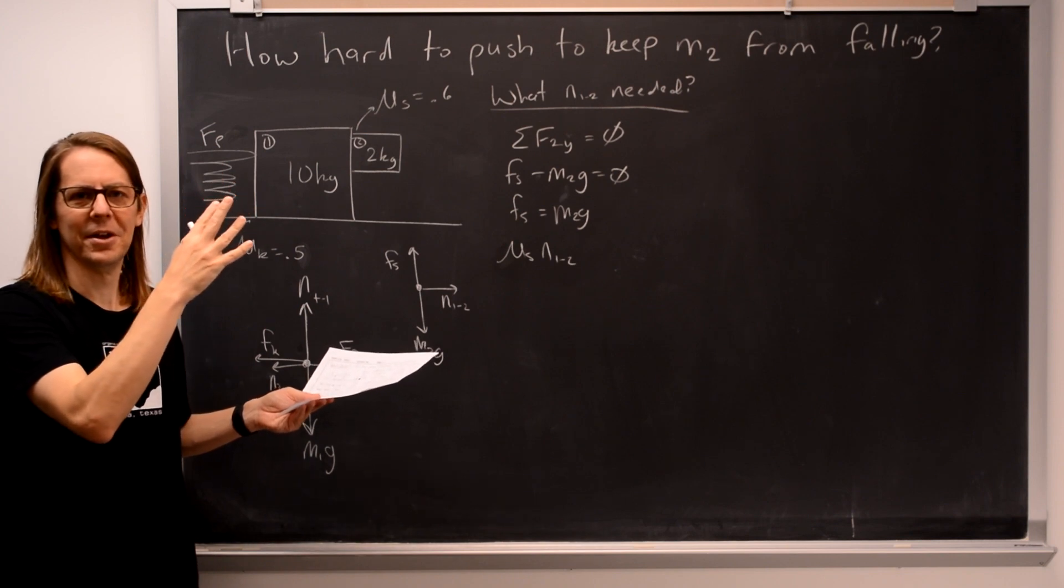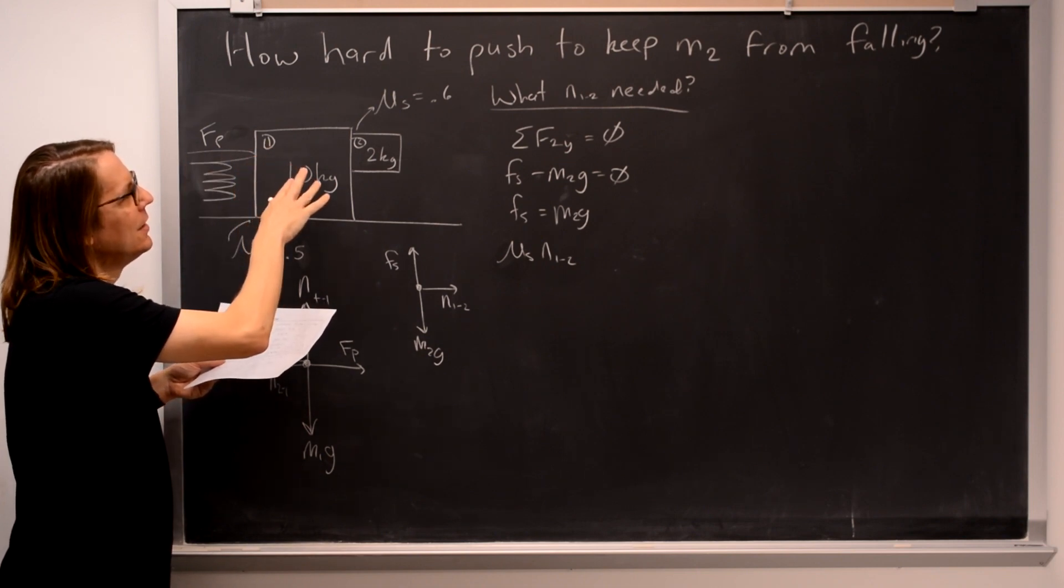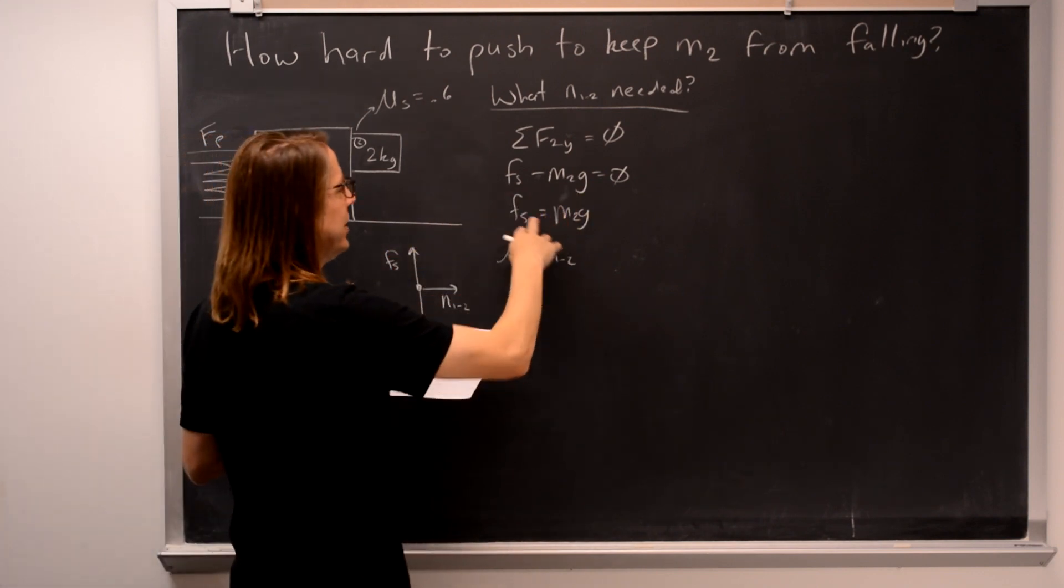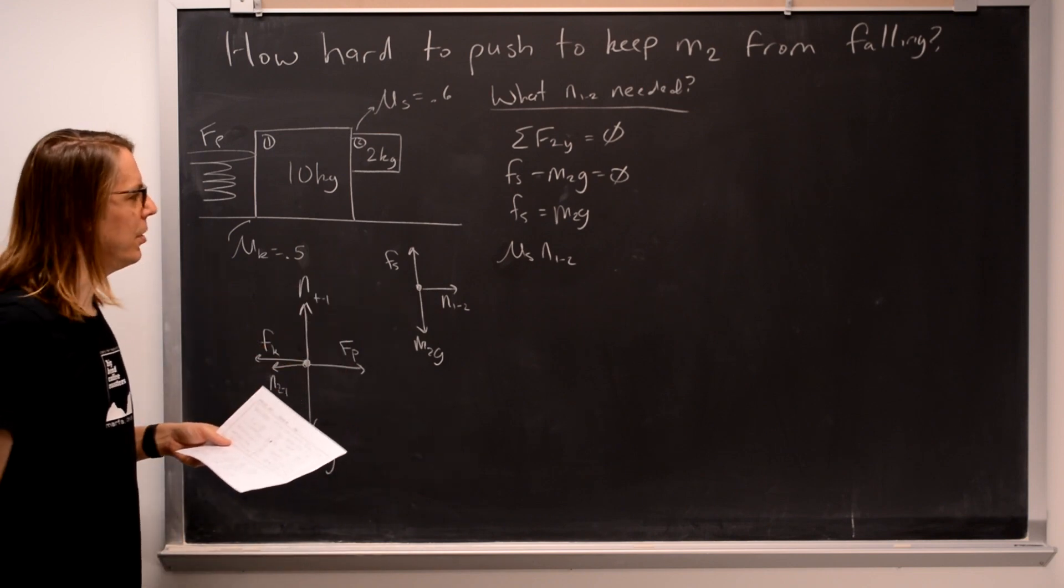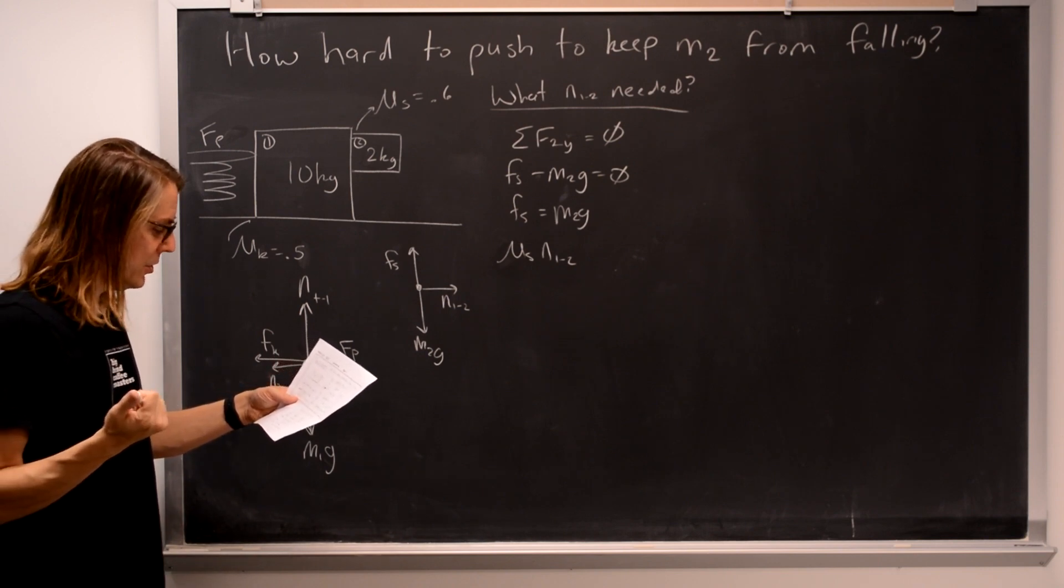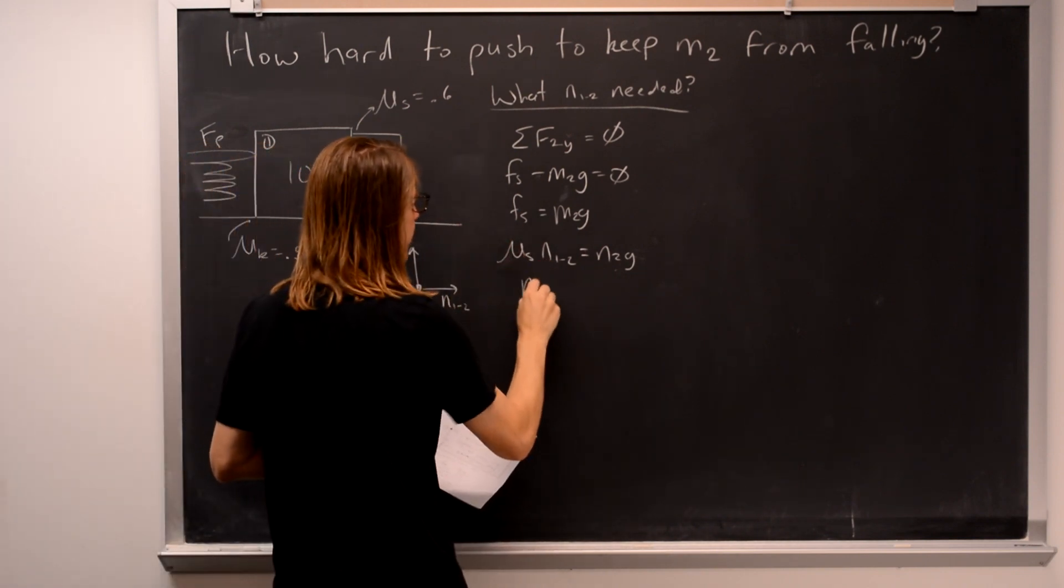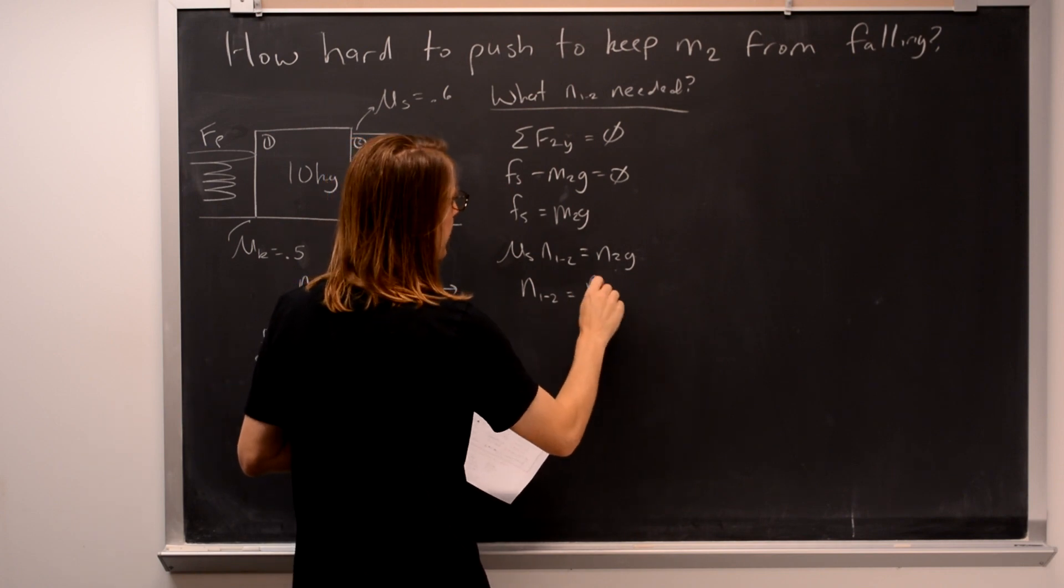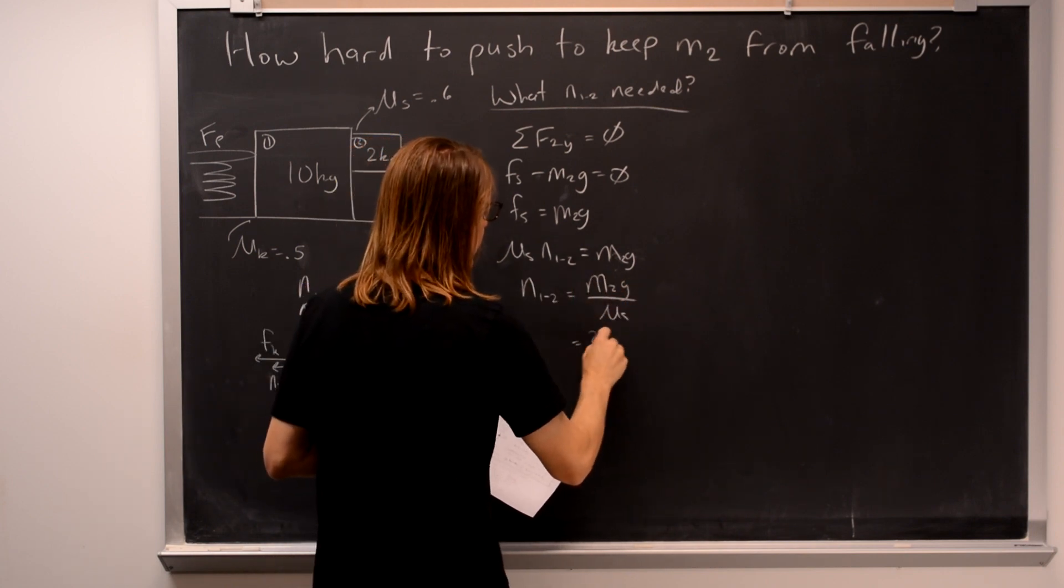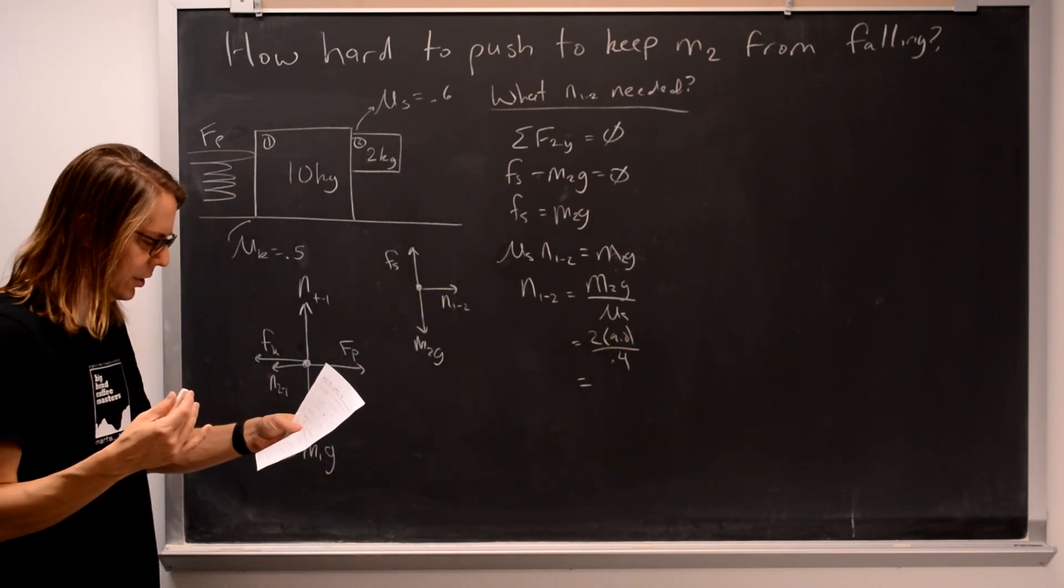Now, remember, it could be any value up to that. We're looking for what is needed. What's the minimum force you can apply to keep it from falling? If you push harder, it'll definitely work. So if we push a little bit softer, we're seeing how far can you bring it down before this has to exceed the value to fall. So we're just going to say it's equal to mu S N1,2. We care about the maximum value in this case. So mu S N1,2 equals M2g. So the normal force 1 to 2 we need is M2g over mu S. So it's 2 times 9.8 over 0.4. That's 32.7 newtons.